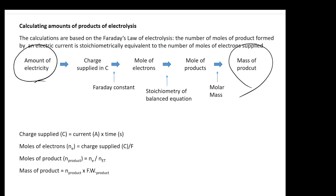The first step is to calculate the amount of electricity. The way you calculate it is very simple. You take the current provided in your question and multiply it by the amount of time — make sure it's in seconds. By doing this simple calculation, current times seconds gives you the charge, which is the number of coulombs injected into your system.